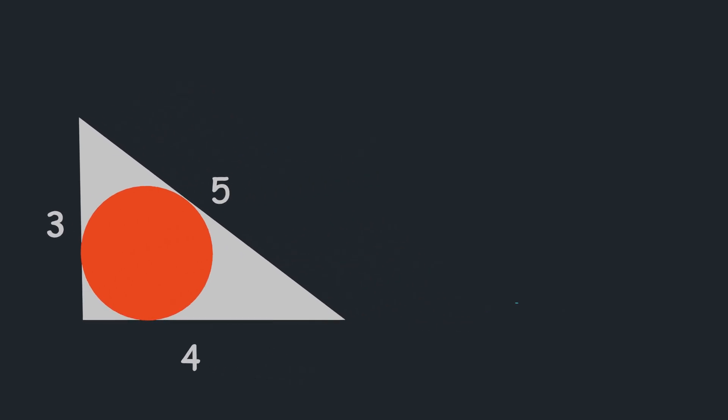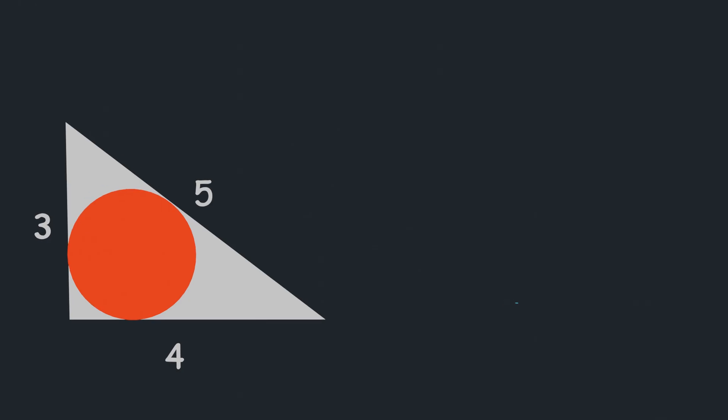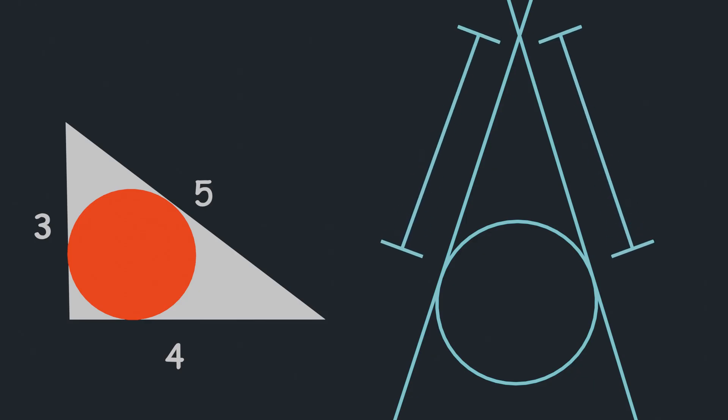To solve this problem, we should be aware of one of the properties of circle and its tangents, which is, if two tangents of a circle are intersecting, then the length between the point of intersection and point of contact with the circle will be equal.